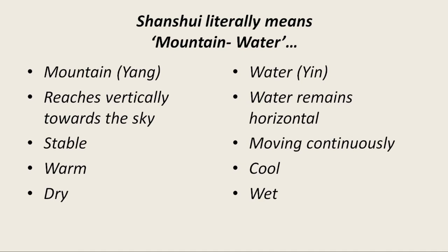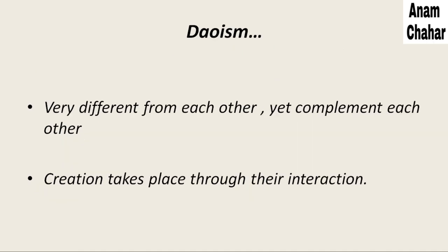Mountain Yang is a masculine force, and water Yin is a feminine one. Creation takes place through their interaction — without it, nothing new can be created. Water alone or mountain alone cannot create anything, but when they come into contact, creation takes place. For example, a tree needs both soil and water. This concept is called Taoism, which says that mountain and water are two different poles but incomplete without each other, because without their interaction, nothing new can originate.